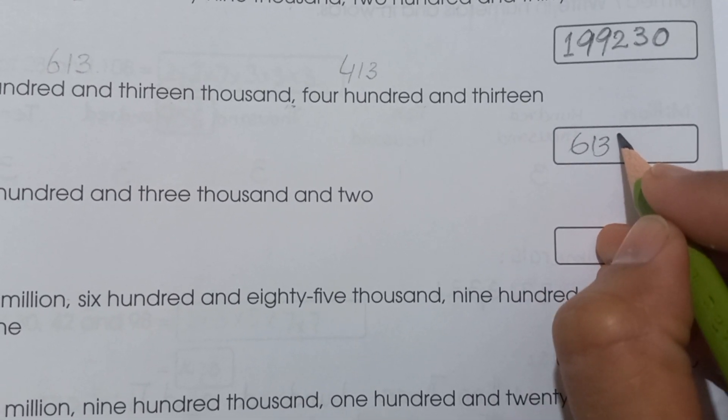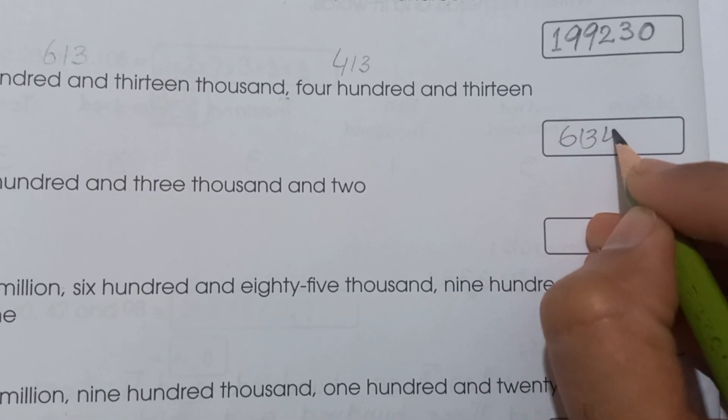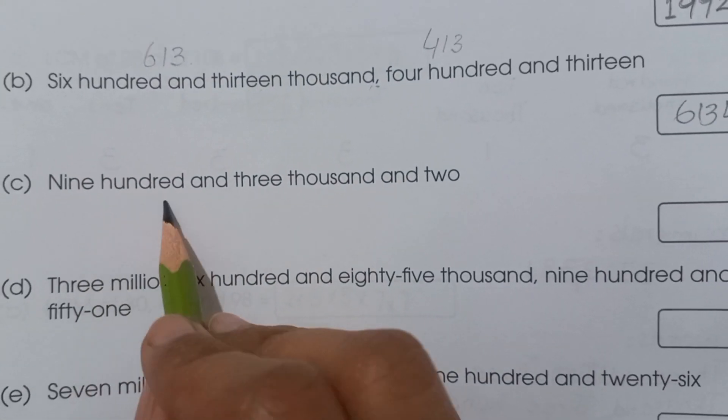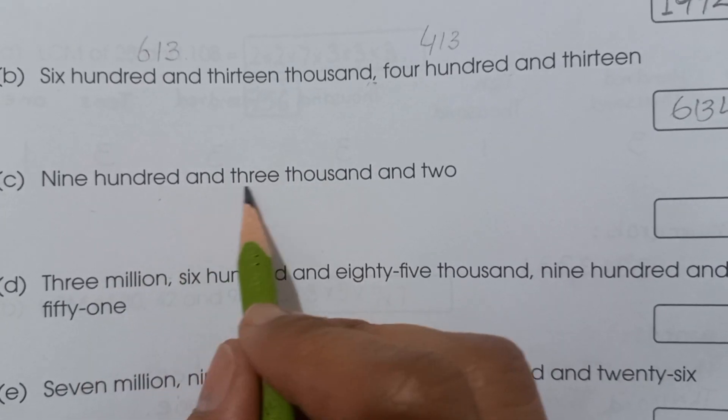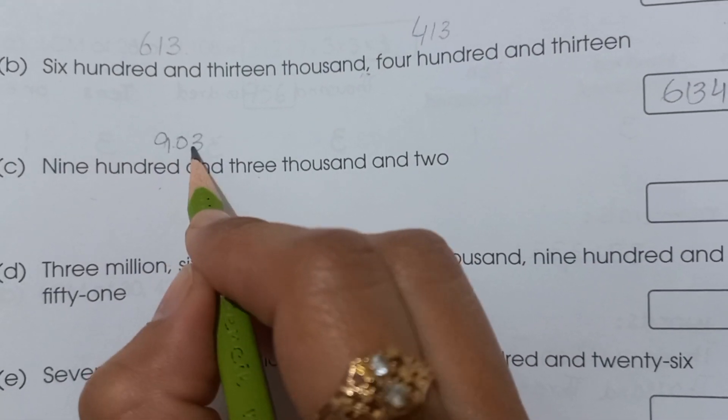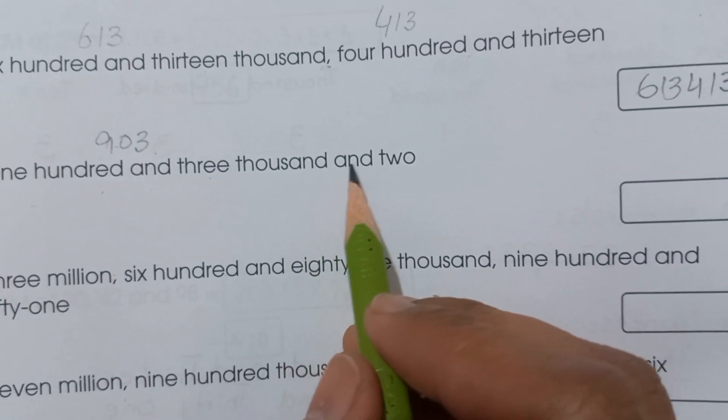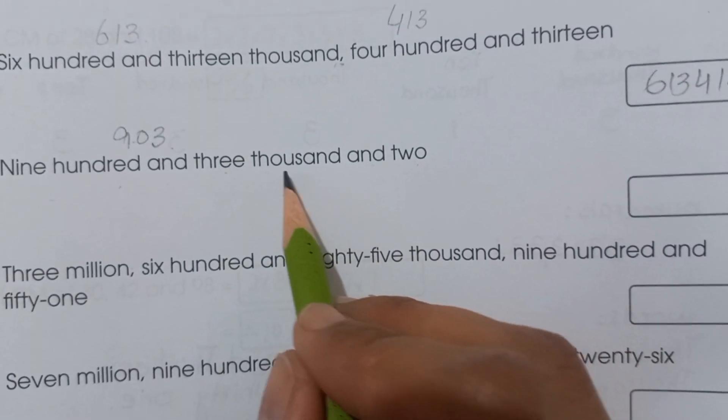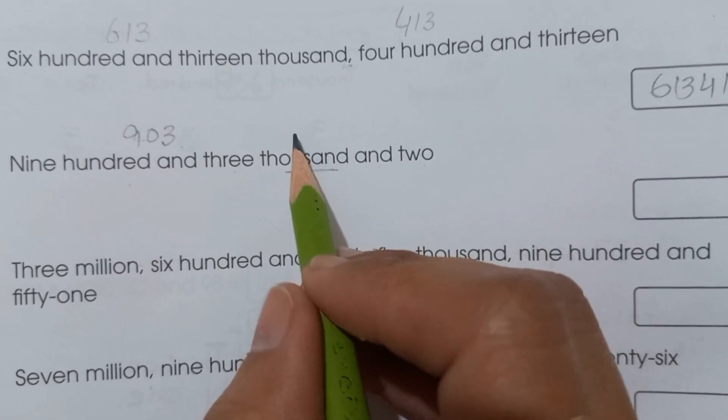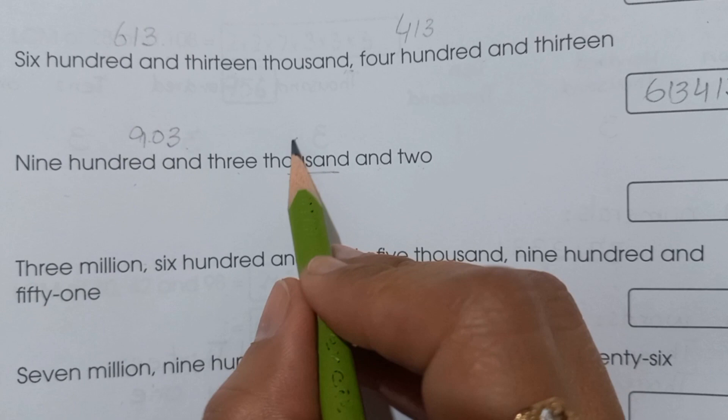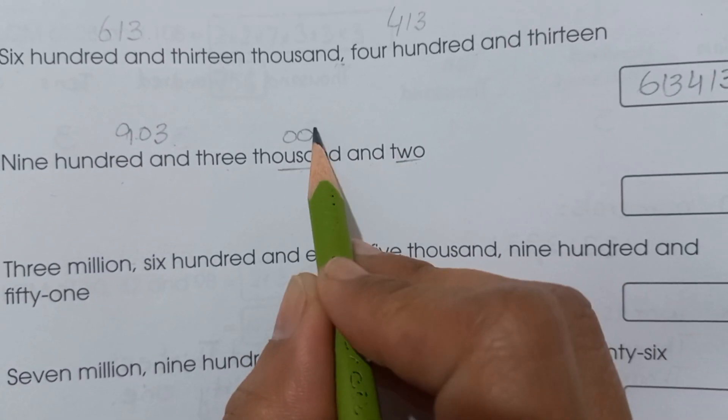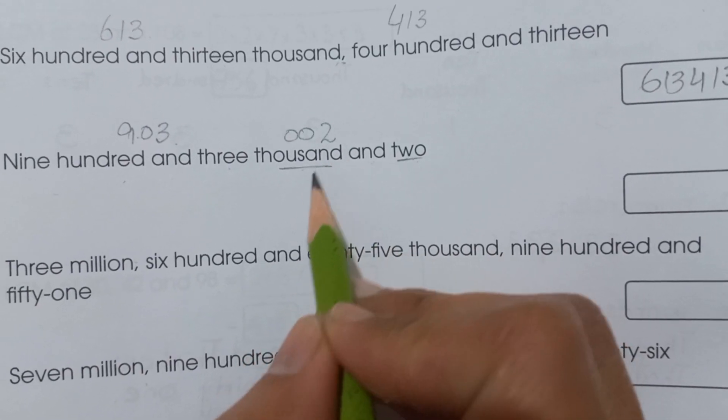Next, part (c): nine hundred and three thousand and two. In thousand, students, you have to put two zeros, and then two. This is 903,002.